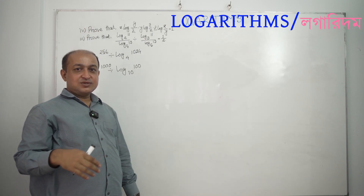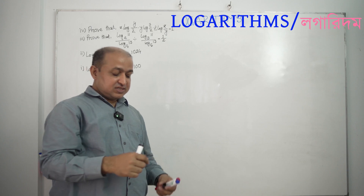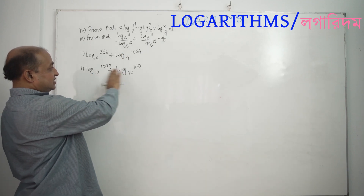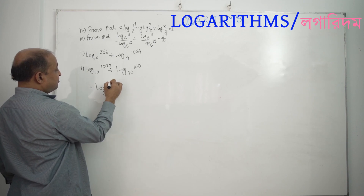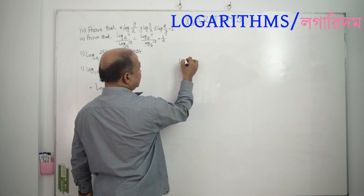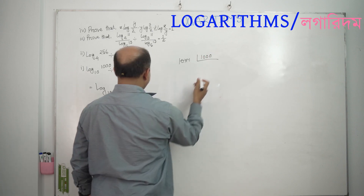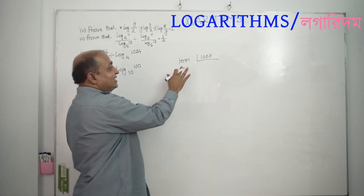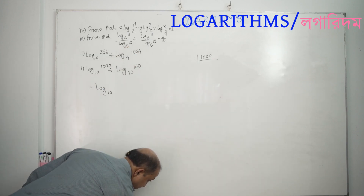We have to find the factors. And we have to do this: log base 10 of 1,000. So, we can do 100 as well. We can use a base as well. So, we can use 10 to the power of 3.